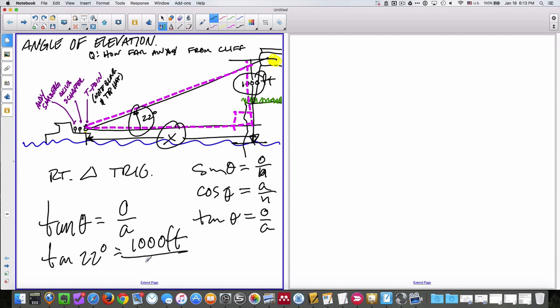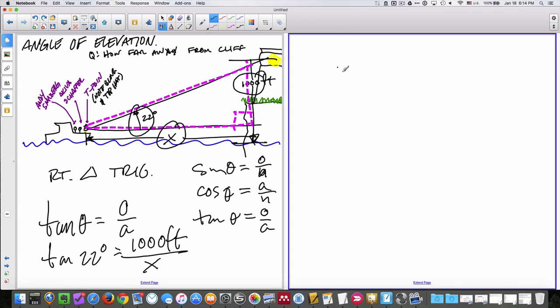And then substitute tangent of 22 degrees is equal to the length of the opposite leg divided by the length of the adjacent leg, which is X.